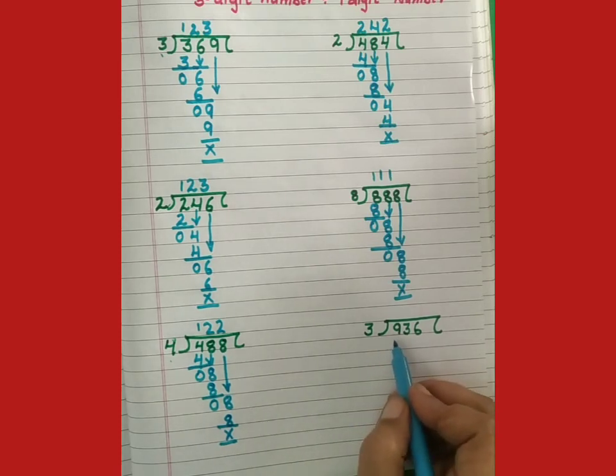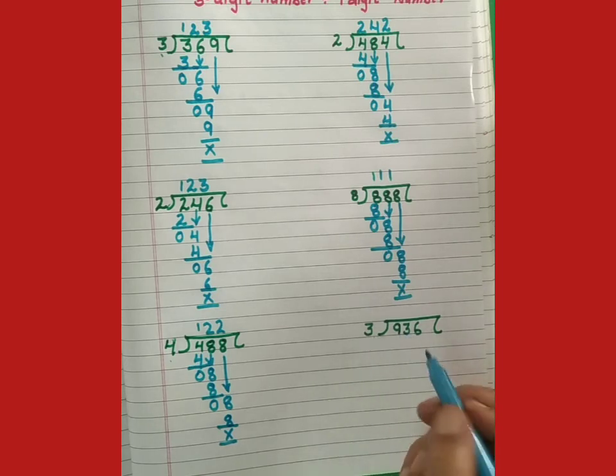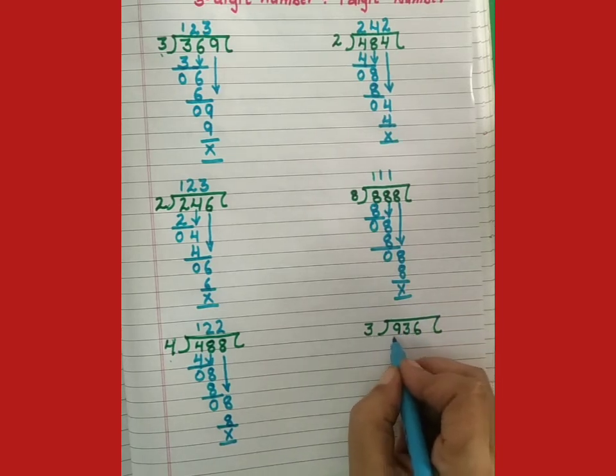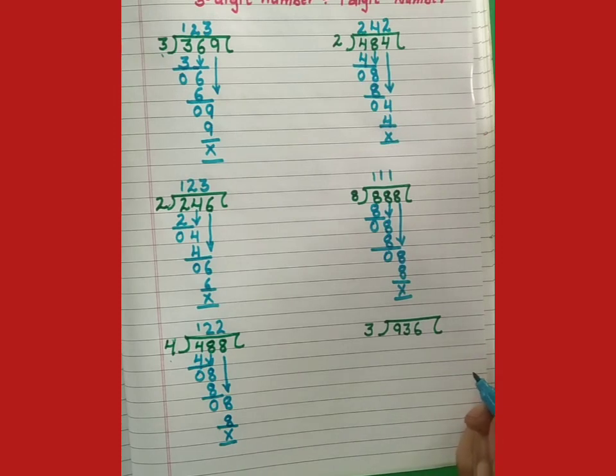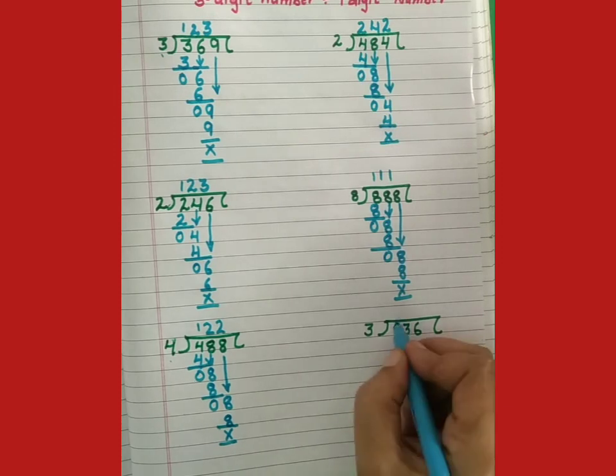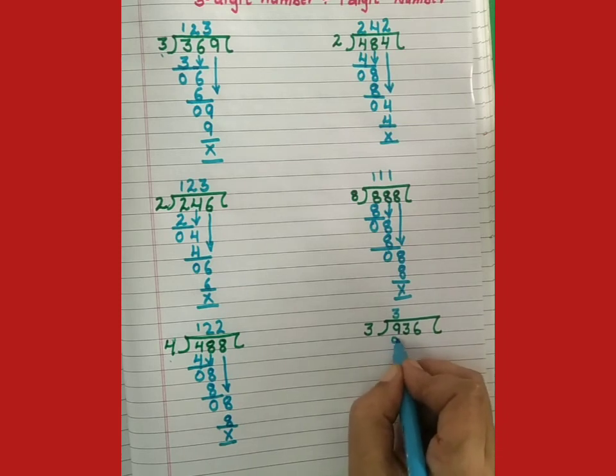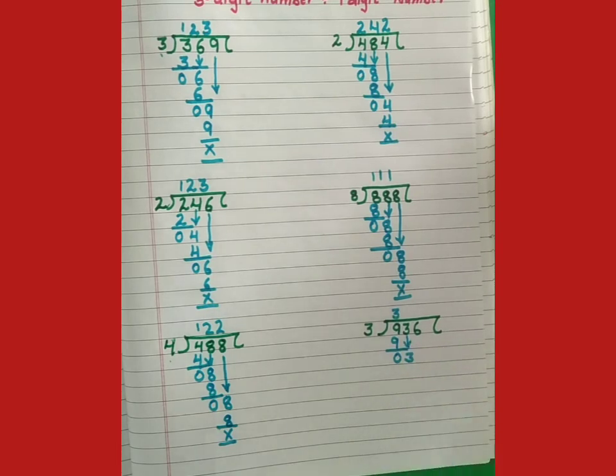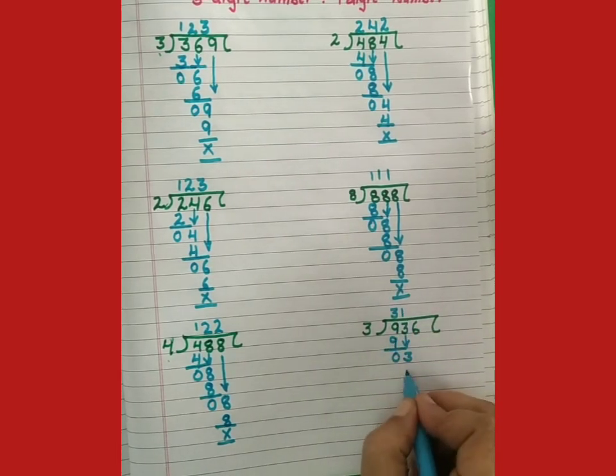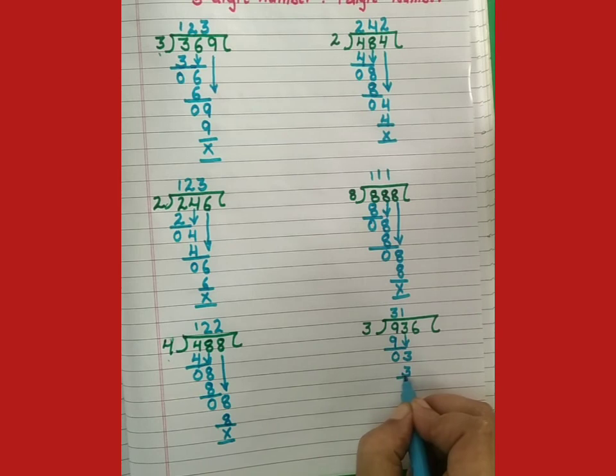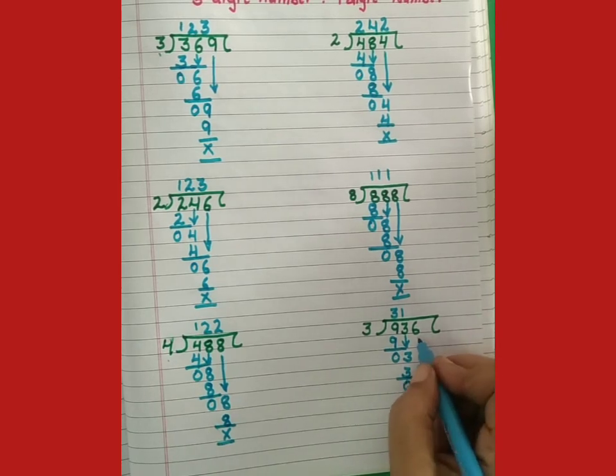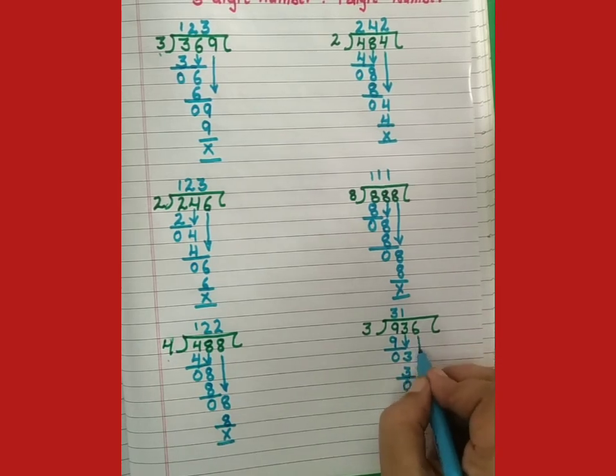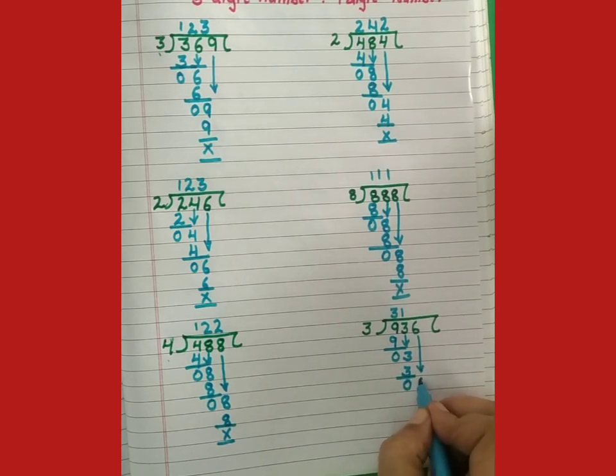Next sum is 936 divided by 3. So students, first digit kya hai 9. 3 kya table me 9 kya hai. 3 ones are 3, 3 twos are 6, 3 threes are 9. Next digit is 3. 3 kya table me 3 kya hai. Quotient is 312.